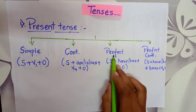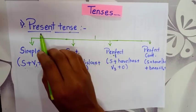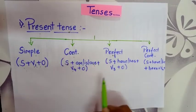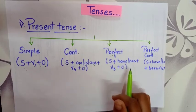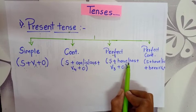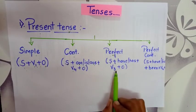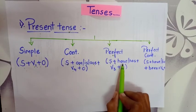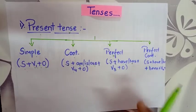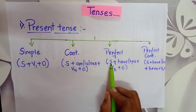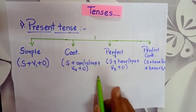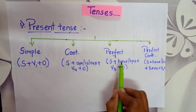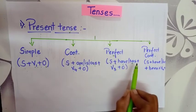The third type is perfect present tense. The formula is S plus have/has plus V3 plus object. S is subject, O is object, and V3 is the past participle form of the verb. Have and has should be used as convenient to the subject. If the subject is I, we must use have, even though I is singular. For plural subjects, use have. For singular subjects — he, she, it — use has.